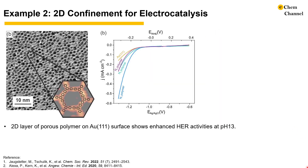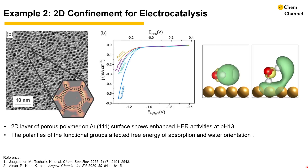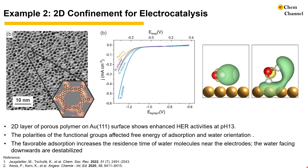One example mentioned earlier is to use 2D-layered materials to promote activities in electrocatalysis. In this work, Alexa, Kern, and co-workers put a 2D layer of porous polymer on a single crystalline gold-111 surface and showed enhanced HER activities at pH 13. They used three types of nitrogen-containing polymers and found that all polymer-coated electrodes had stronger activities than the bare gold electrode. They attributed this to the polarity of the functional groups, which affected the free energy of adsorption and water orientation. The stronger adsorption increases the residence time of water and atomic hydrogen close to the electrode, which consequently increases the catalytic activity.